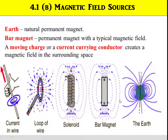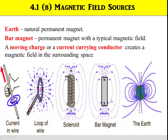There are a few sources of magnetic field that we could find in this world. We can categorize these as permanent and non-permanent magnets. Earth is an example of a natural permanent magnet, whereas the bar magnet is a permanent magnet with a typical magnetic field. A moving charge or a current-carrying conductor also creates a magnetic field in the surrounding space.